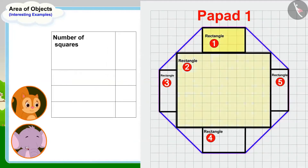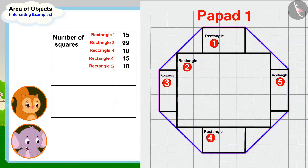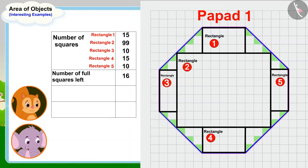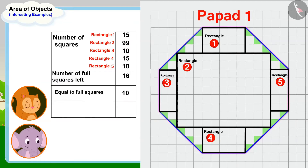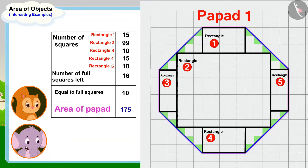Let's first find the area of this shaped popper. Let me first draw a rectangle in this shape so that I can find it easy to find the area. Appu made a rectangle in the first popper's shape. He wrote down the number of squares falling in the rectangle, then the number of full squares left — 16 — and finally the number of remaining half squares — 20, which equals 10 full squares. To find the area of this popper, we just add the numbers of all these squares. There are 175 squares in total, so the area of this popper is 175 square centimeters.